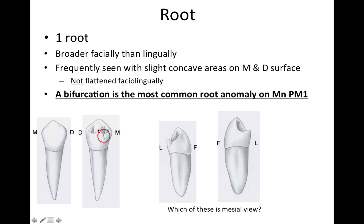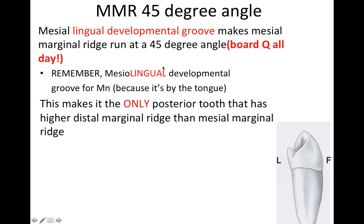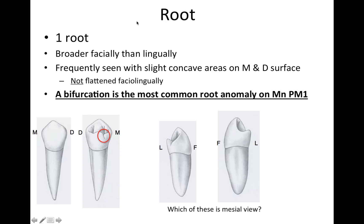The root: it's going to have one root. From the lingual, you can see that mesial lingual developmental groove. The root is broader facially than lingually, and frequently seen with a slight concavity on the mesial and distal surfaces. Note that the root is not flattened in a facial-lingual direction — it's flattened mesio-distally. The most common root anomaly on this premolar is a bifurcation.